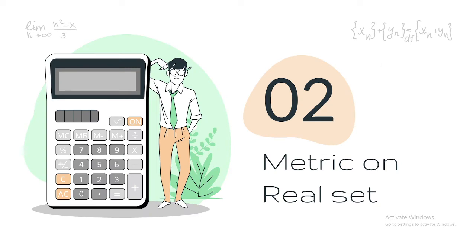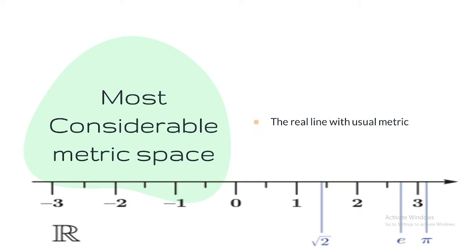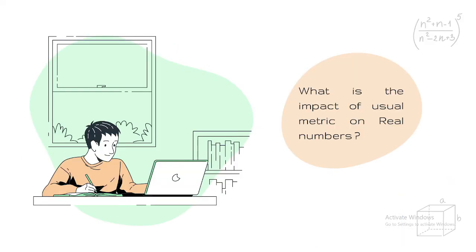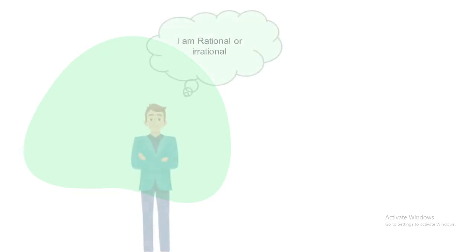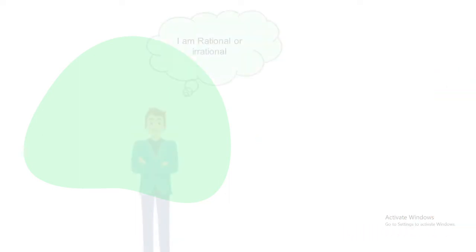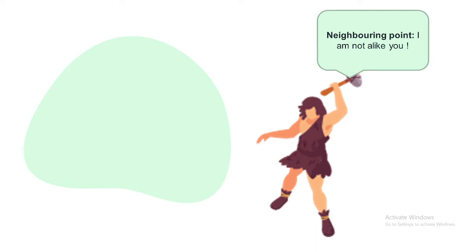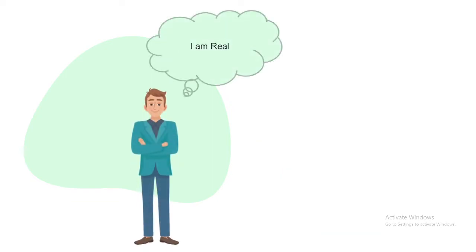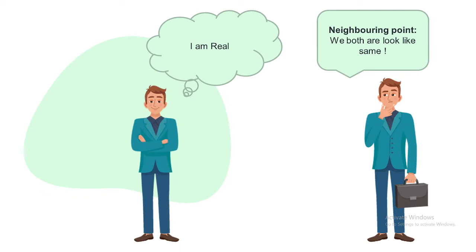In the first section we learned what a metric is and saw some examples. Now we are going to look at the metric on the set of real numbers. In real life, we always use the usual metric — the absolute value of x minus y for any two points x and y. What is the impact of the usual metric on real numbers? If I take a rational number, its neighboring points can be rational or irrational. But in the real numbers, this problem does not arise: if I take a real number, the neighboring point is also a real number. This is the beauty of the usual metric.